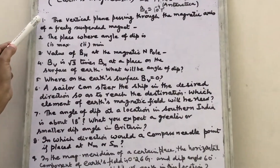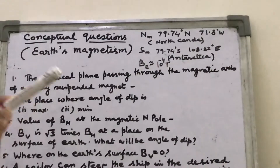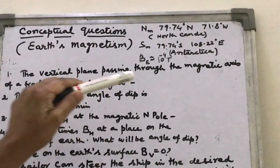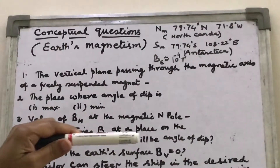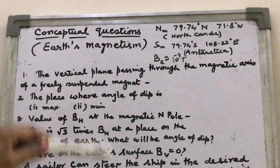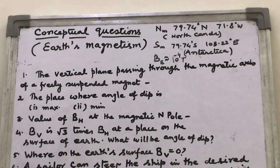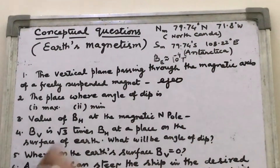The first question: the vertical plane passing through the magnetic axis of a freely suspended magnet — write its name. We have seen that when a magnetic needle or bar magnet is suspended freely, the vertical plane drawn through that axis is called the magnetic meridian. So the answer is geomagnetic meridian, or simply magnetic meridian.